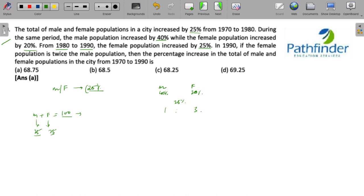From 1980 to 1990, the female population increased by 25%. This is in 1970. What about 1980? The male population increased by 40%, so male population becomes 35. Female population increased by 20%, so it would become 90.